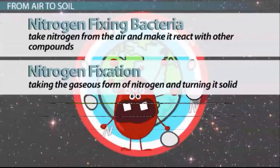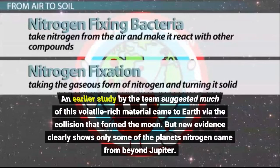An earlier study by the team suggested much of this volatile-rich material came to Earth via the collision that formed the Moon. But new evidence clearly shows only some of the planet's nitrogen came from beyond Jupiter.